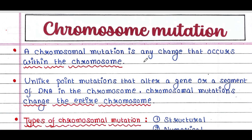A chromosomal mutation is any change that occurs within the chromosome. Unlike point mutations that alter a gene or a segment of DNA in the chromosome, chromosomal mutations change the entire chromosome. Point mutation alters a single base, but chromosomal mutation alters a chunk of DNA that includes many bases, hence affecting the entire chromosome.